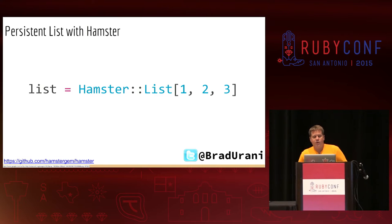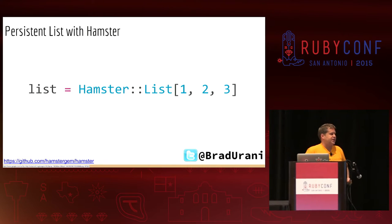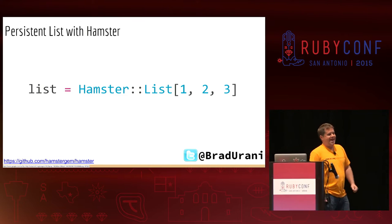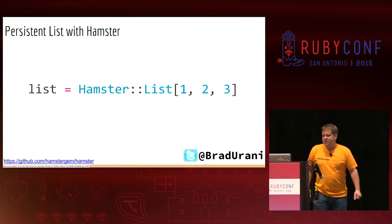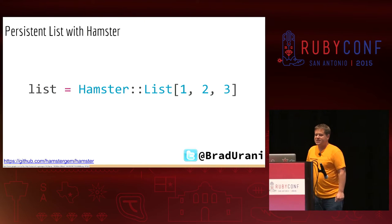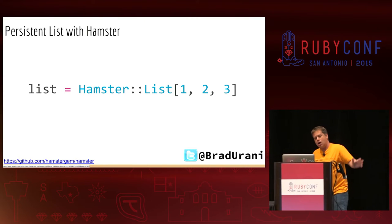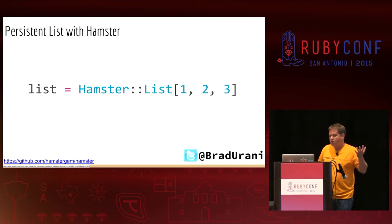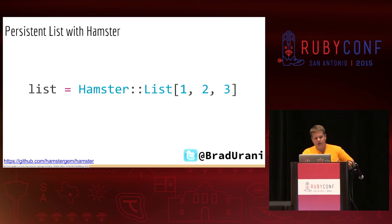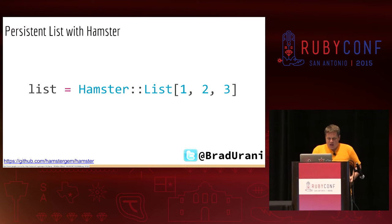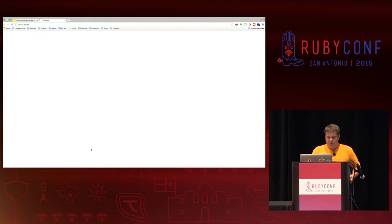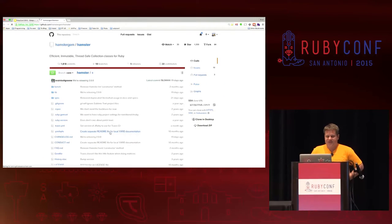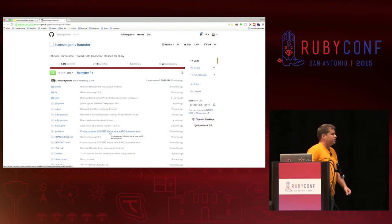We get persistent data structures with a third-party gem called Hamster. It's a really awesome gem. Here I've made a list just containing the items one, two, and three. It's got this whole collection of persistent immutable data structures.